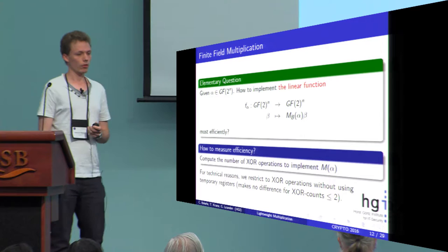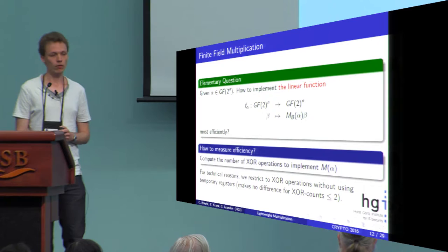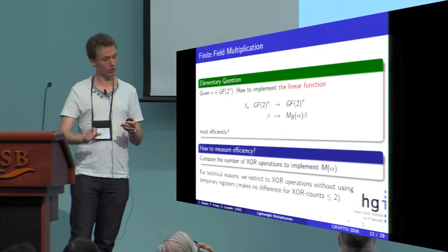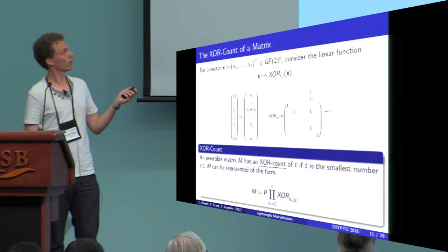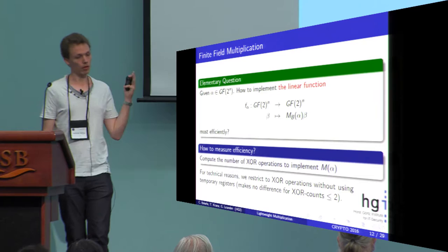Now we know how to measure efficiency: we just compute the number of XOR operations needed to implement this matrix M_alpha. It is to note that for technical reasons, we here restrict to XOR operations without using temporary registers. That means we are using in-place operations. We are not allowed to store an intermediate value in an external register and use it afterwards. But it makes no difference if the XOR count is smaller or equal to two. And since all of our constructions will have an XOR count smaller or equal to two, this makes no difference in our case.